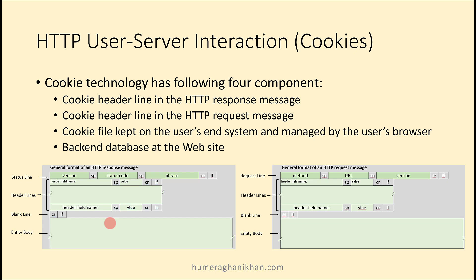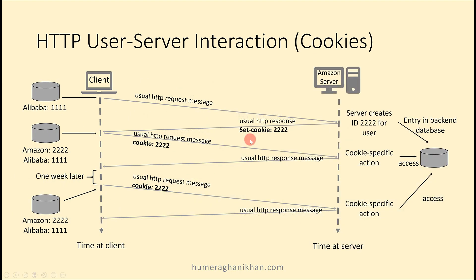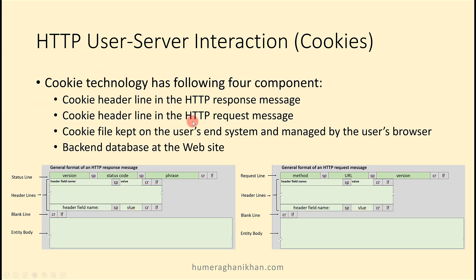Cookie technology has the following four components. First is the cookie header line in the HTTP response message. Looking back at the diagram, this is the response message where the server first sets the cookie for the client — it creates the cookie and sends it to the client. Second is the cookie header line in the HTTP request message.